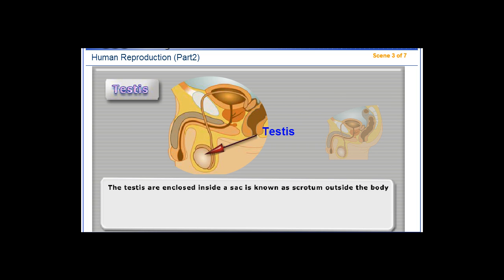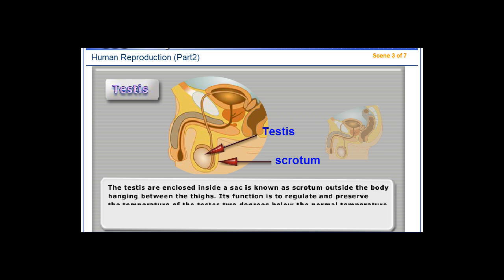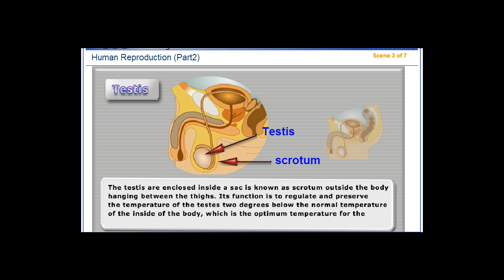The testis are enclosed inside a sac known as the scrotum, located outside the body and hanging between the thighs. Its function is to regulate and preserve the temperature of the testis two degrees below the normal temperature of the inside of the body, which is the optimum temperature for the growth and development of sperm.